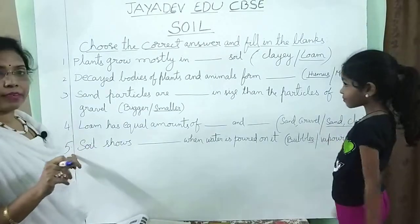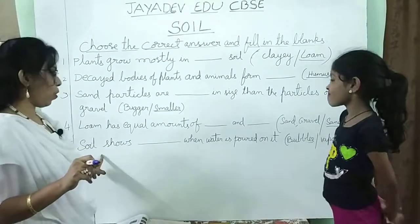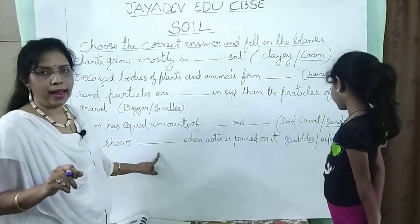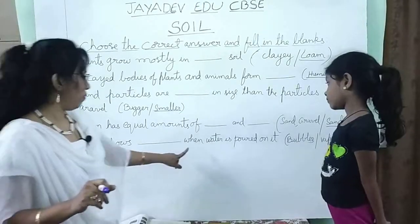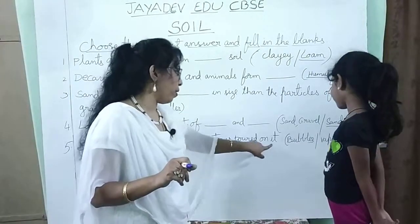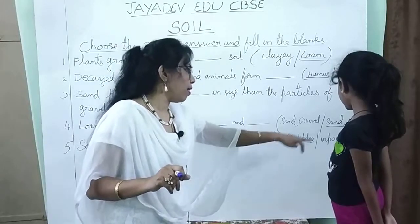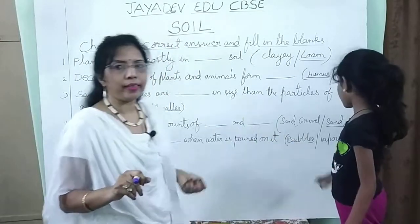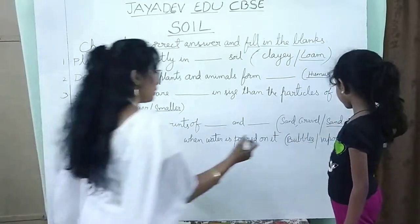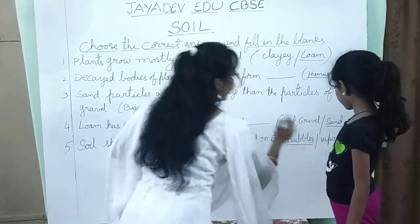And the fifth one is: soil shows dash when water is poured on it — bubbles or vapors? It is bubbles.